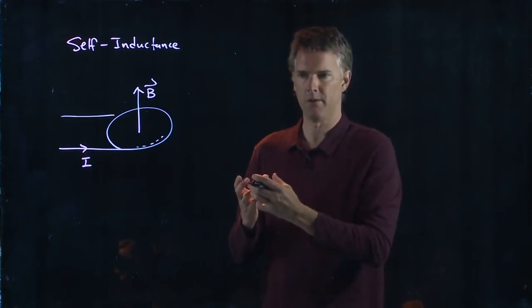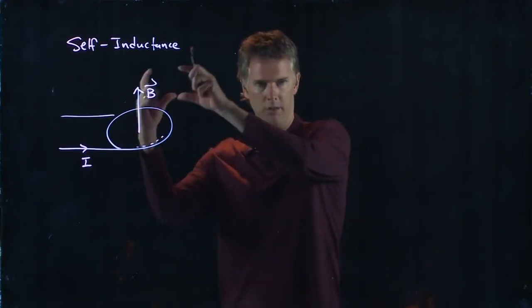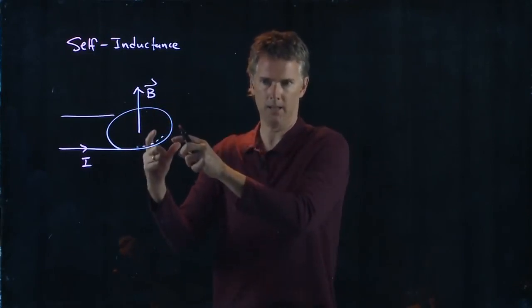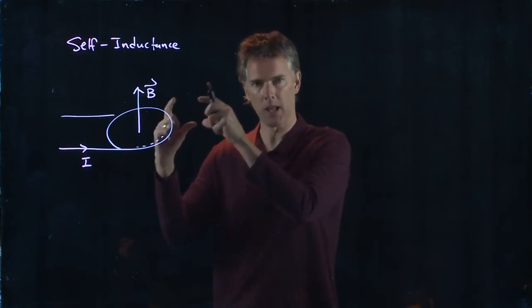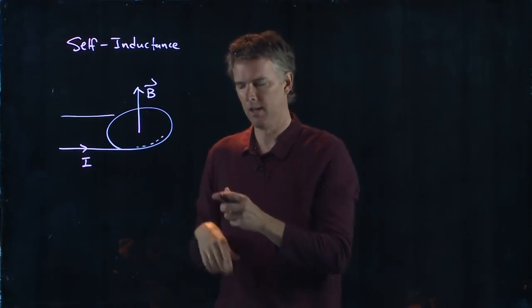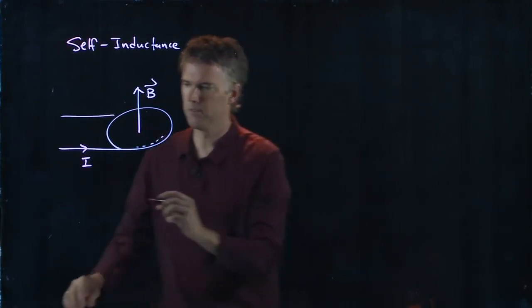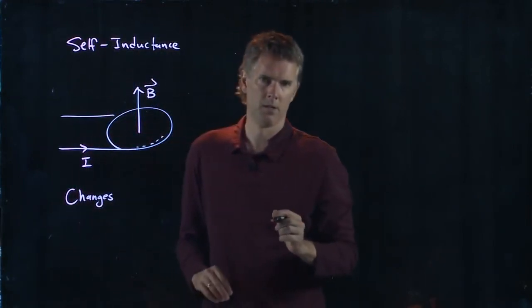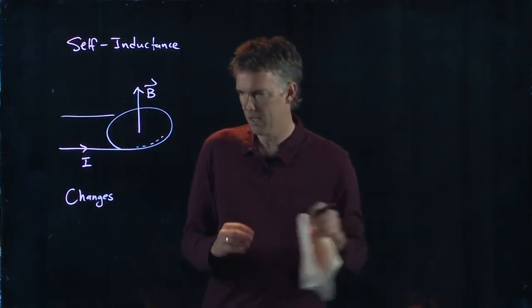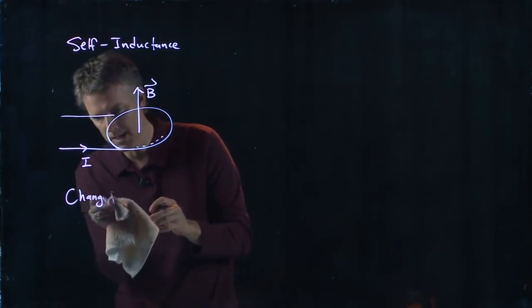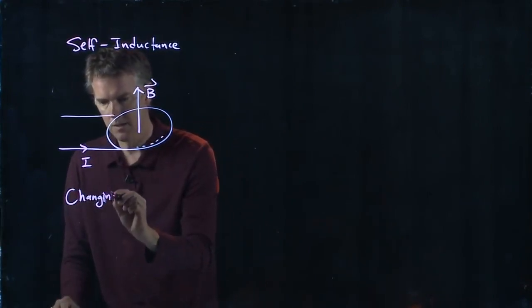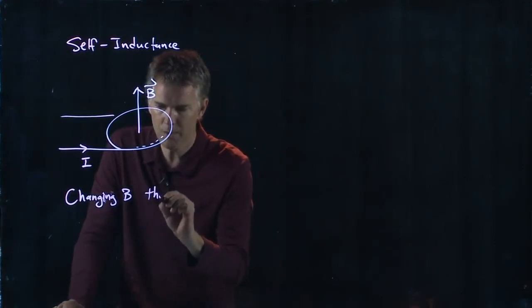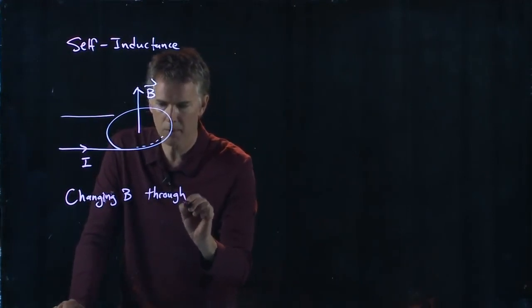There's a B field being generated that is changing the flux that I see and I don't like that. Lenz's law says I should not like a change in flux, and so there is an EMF that is developed to oppose that. So the changing B field through itself, through the same coil.